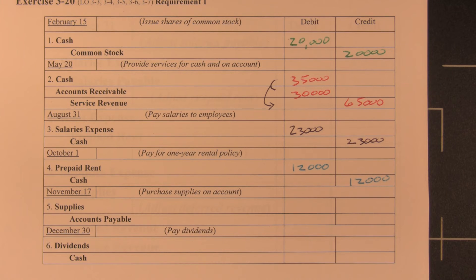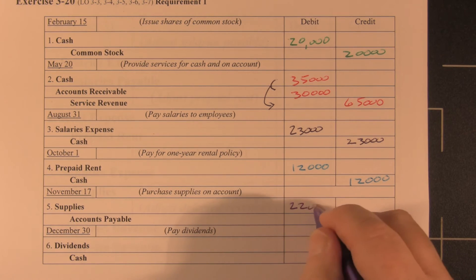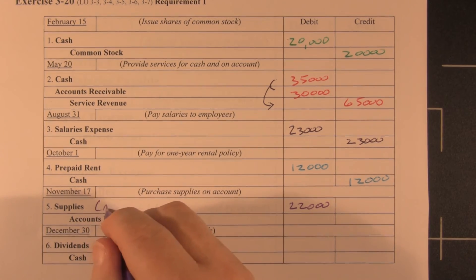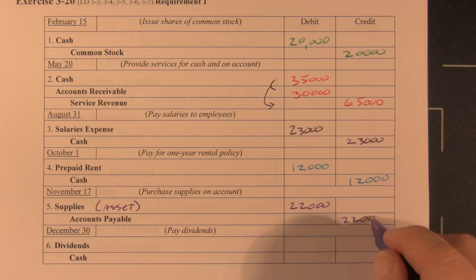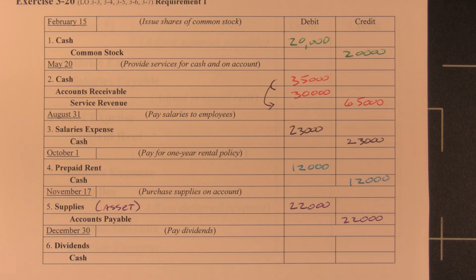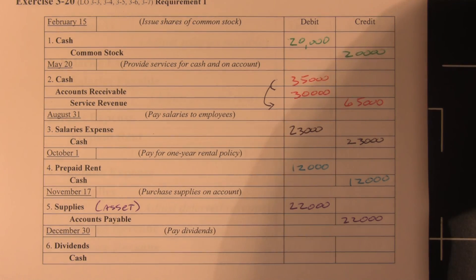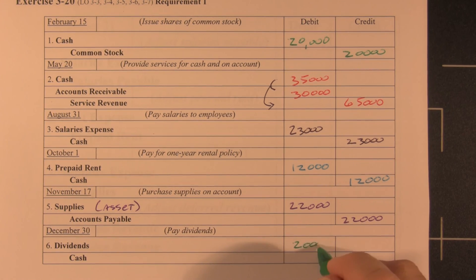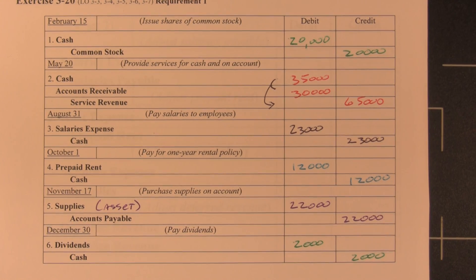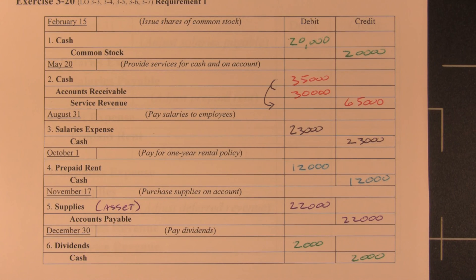On November 17th, we purchased supplies on account: a $22,000 debit to supplies (an asset — supplies on hand) and a $22,000 credit to accounts payable. Then at year-end, we paid our owners dividends of $2,000 — a $2,000 debit to dividends and a $2,000 credit to cash. That's Exercise 320, Requirement 1.